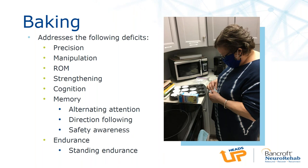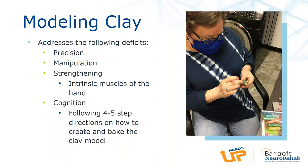We addressed baking, and in those activities we addressed precision, coordination, manipulation, range of motion, strength, cognition and memory, as well as alternating attention and direction following. What was great with Joan was she didn't realize she was doing actual work — she never complained of fatigue while standing and baking for 30 minutes. Another leisure interest we addressed was modeling clay or polymer clay, which addressed coordination, precision for manipulation, and strengthening the intrinsic muscles of the hand — comparable to using therapy putty, which she had no interest in. This also addressed cognition: following four to five step directions on how to create and bake a clay model, and alternating attention between her project, written directions, and video directions.